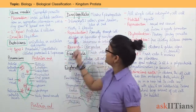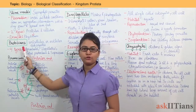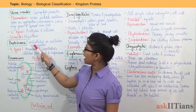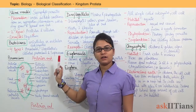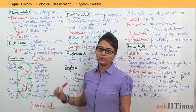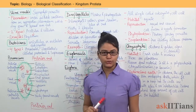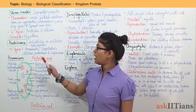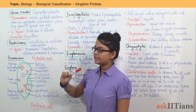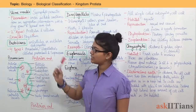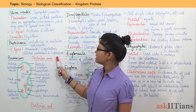Next are protozoans. Under Kingdom Protista we have protozoans. Protozoans are unicellular or acellular eukaryotes. There are four types of protozoans: amoeboid protozoan, flagellated protozoan, ciliated protozoan, and sporozoans.